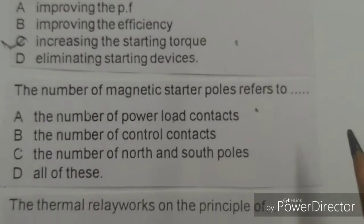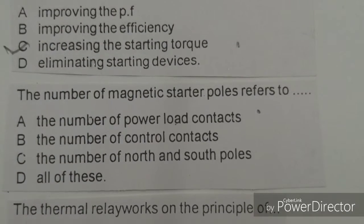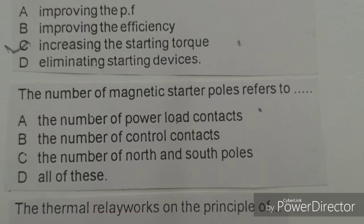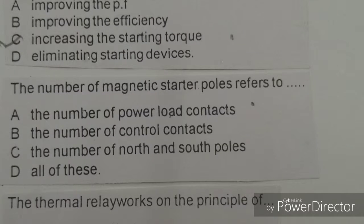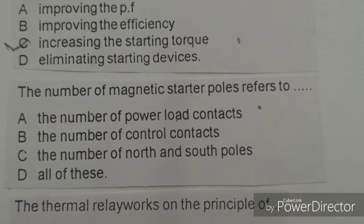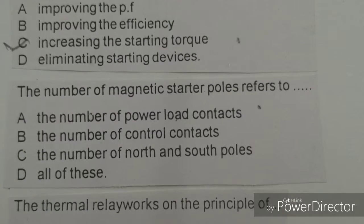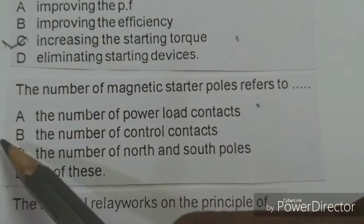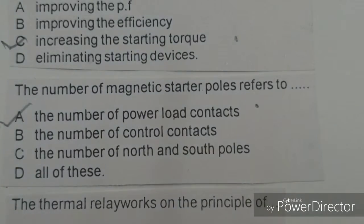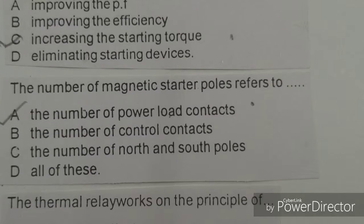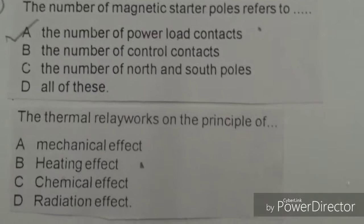Next objective: The number of magnetic starter poles refers to. Options given: the number of power load contacts, the number of control contacts, the number of north and south poles, all of these. The right answer is A, the number of power load contacts.